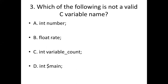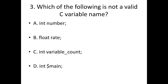Third bit: Which of the following is not a valid C variable name? Option A: int number. Option B: float rate. Option C: int variable_count. Option D: int $main. Answer: Option D, int $main.